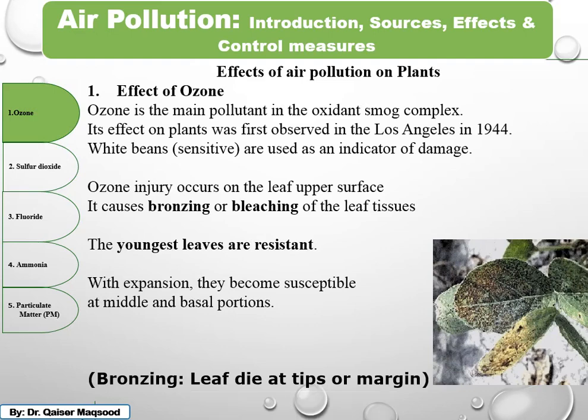Today we will talk about the effects of air pollution on plants. The pollutants chosen for this are ozone, sulfur dioxide, fluorides, ammonia, and particulate matter.